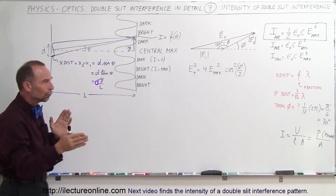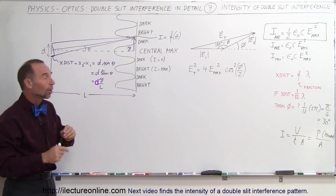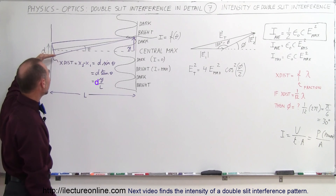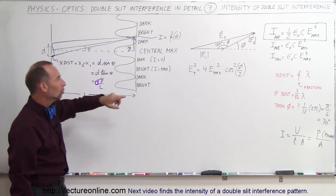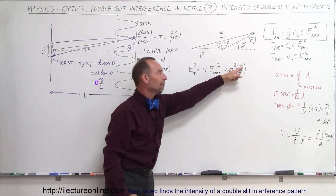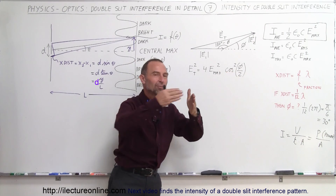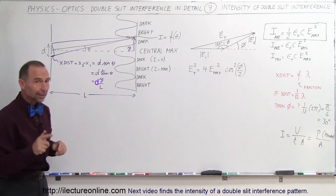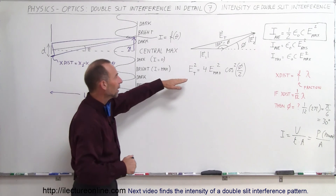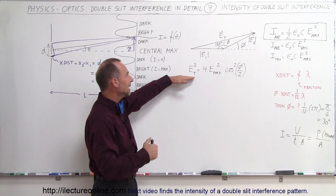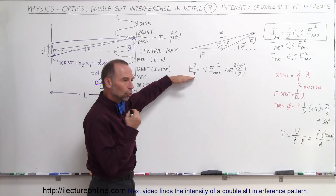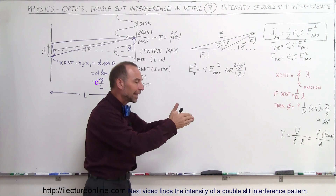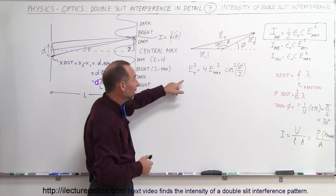Later on we're going to find a way to relate the angle theta — the direction we look — to the phase angle difference when the two beams come together. Remember they're not the same angle. In the last video we found out how to find the total electric field strength when two beams come together based upon their phase difference.